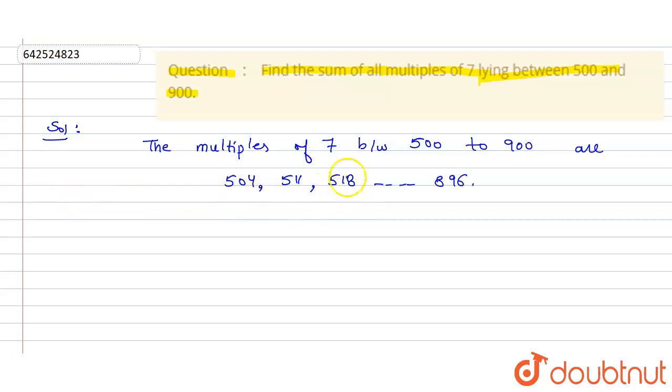We can track here that this is an AP with difference 7. So here the first term A is 504, and common difference D is 7, and the last term L is 896.